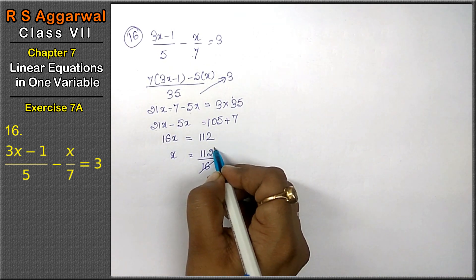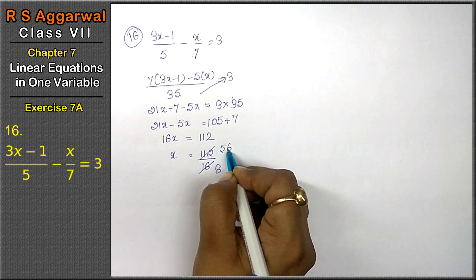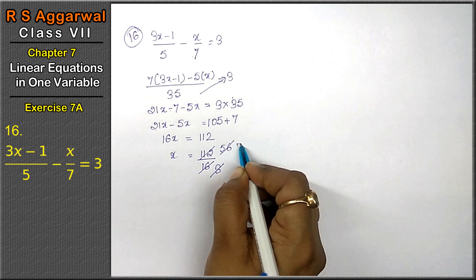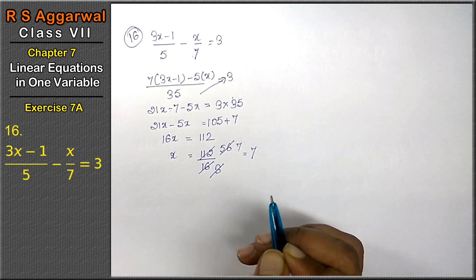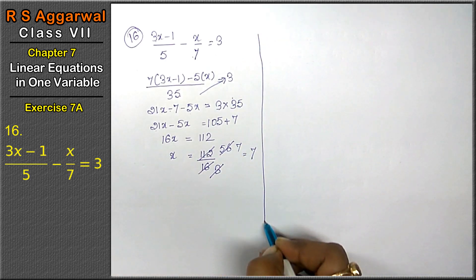2, 8's are 16. 2, 5's are 10 and 2, 6's are 12. 8, 1's are 8. 8, 7's are 56. 7 is the answer. Let's check.